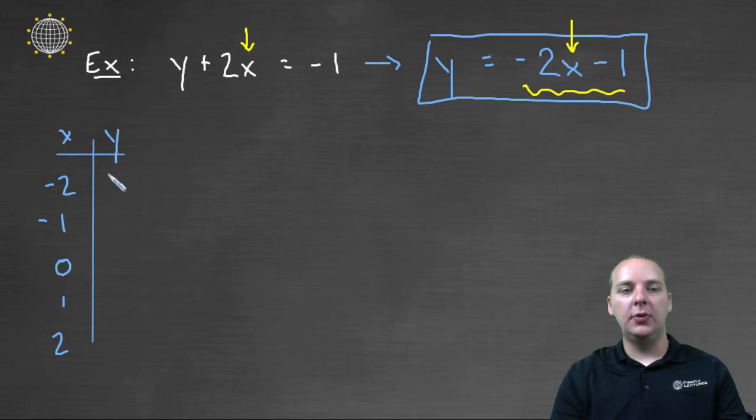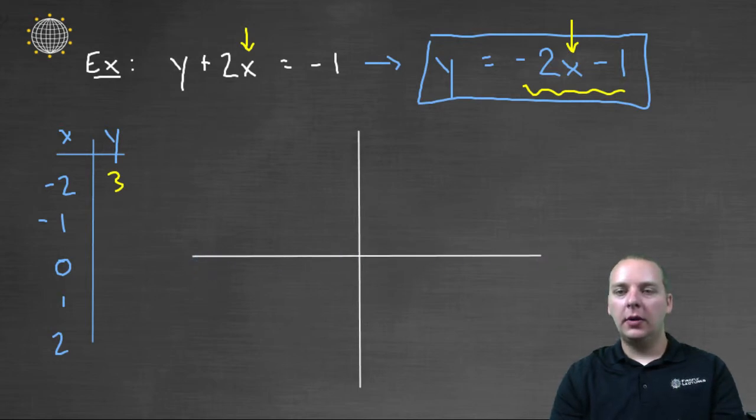Negative two times negative two is four. Four minus one makes y equals three. So we'd have negative two comma three, that'd be one ordered pair on our graph. So let's go ahead and start making our graph as we find these points. Okay so we'll plot negative two comma three. So that point will be plotted right here.